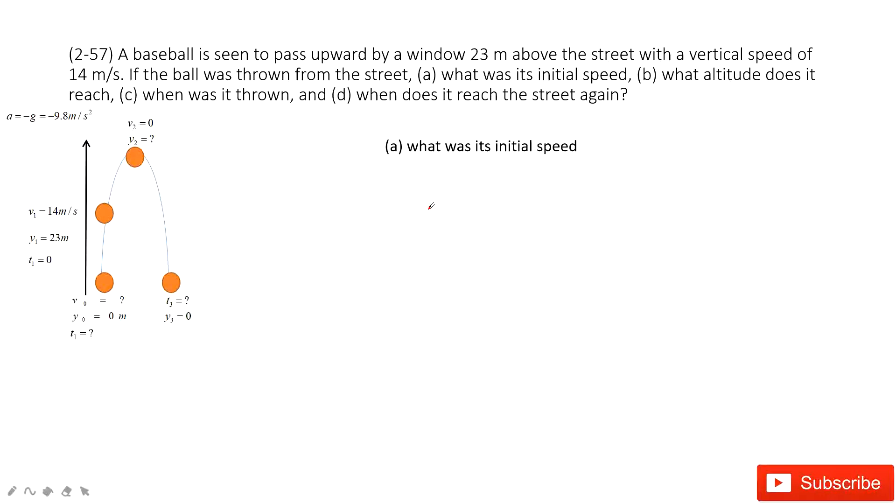It tells us a baseball is seen to pass upward. So at there, this is a window. We find its position is 23 meters and with a vertical speed of 14 meters per second. So v1 is 14 meters per second up.